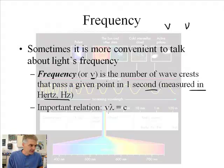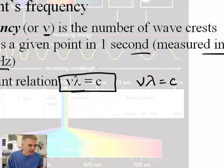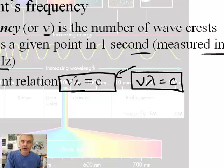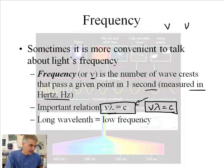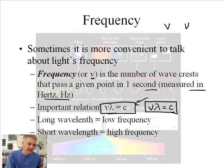Important equation here. I would write this down, definitely. We're going to use some examples. Nu times lambda is equal to c, the speed of light. That's very important. If you have a long wavelength, you'll have a low frequency. And if you have a short wavelength, you'll have a high frequency. We're going to do some math with this in a second.